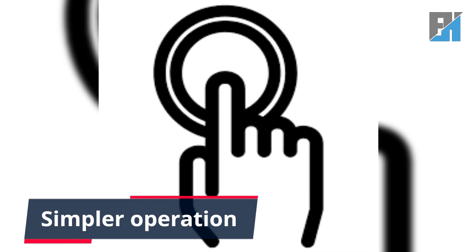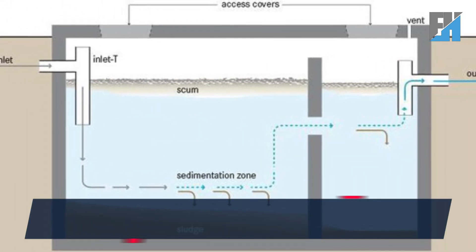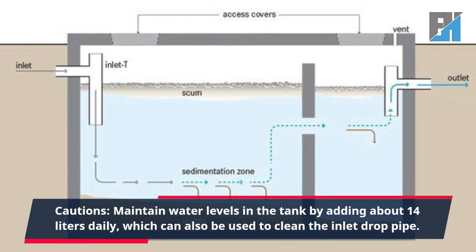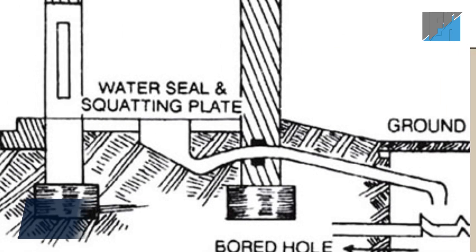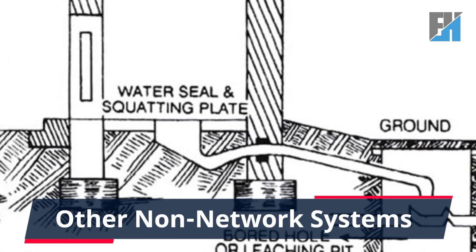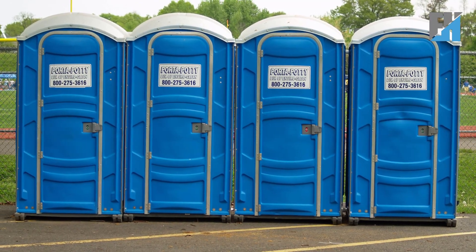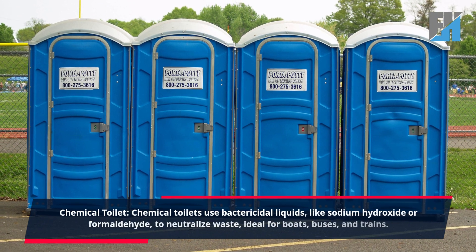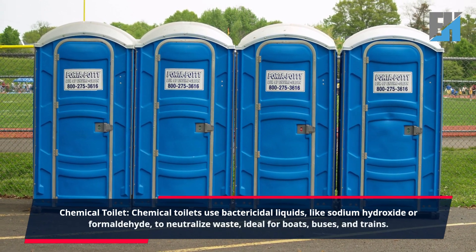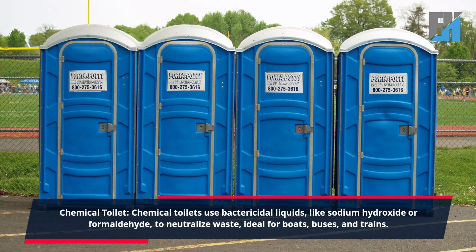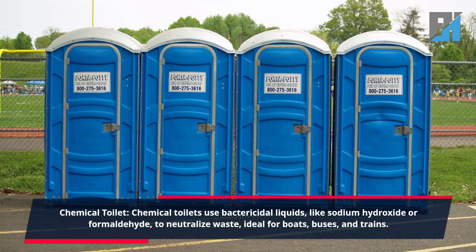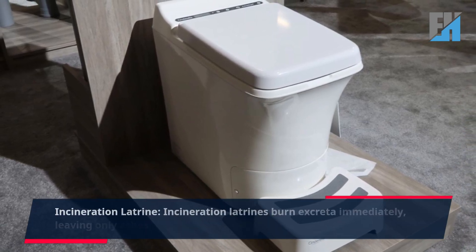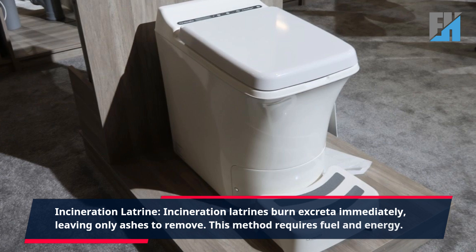Advantages of septic tanks: one, easier to construct; two, less expensive; three, simpler operation. Caution: maintain water levels in the tank by adding about 14 liters daily, which can also be used to clean the inlet drop pipe. Chemical toilets use bactericidal liquids like sodium hydroxide or formaldehyde to neutralize waste — ideal for boats, buses, and trains.